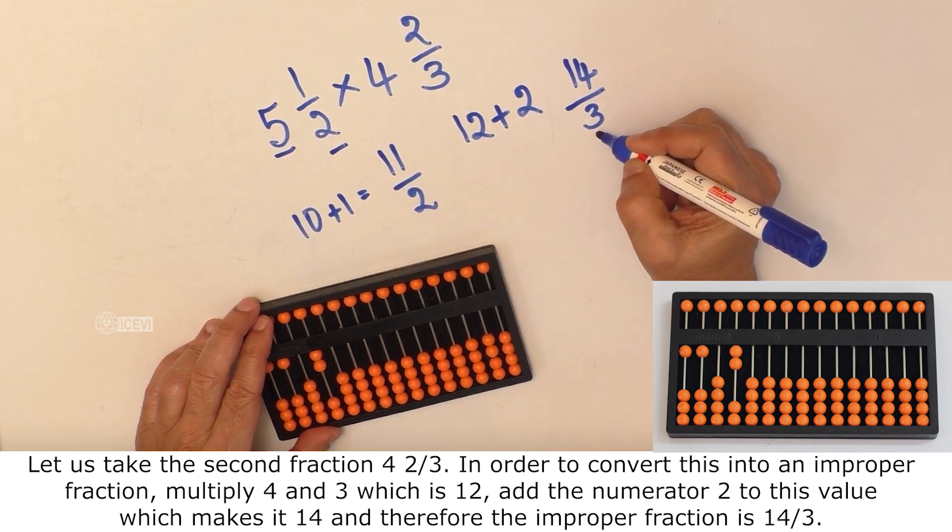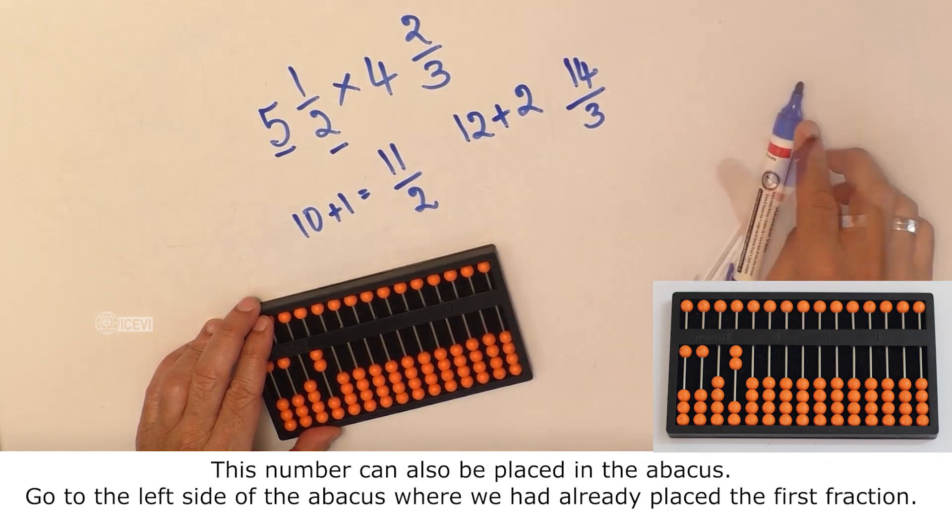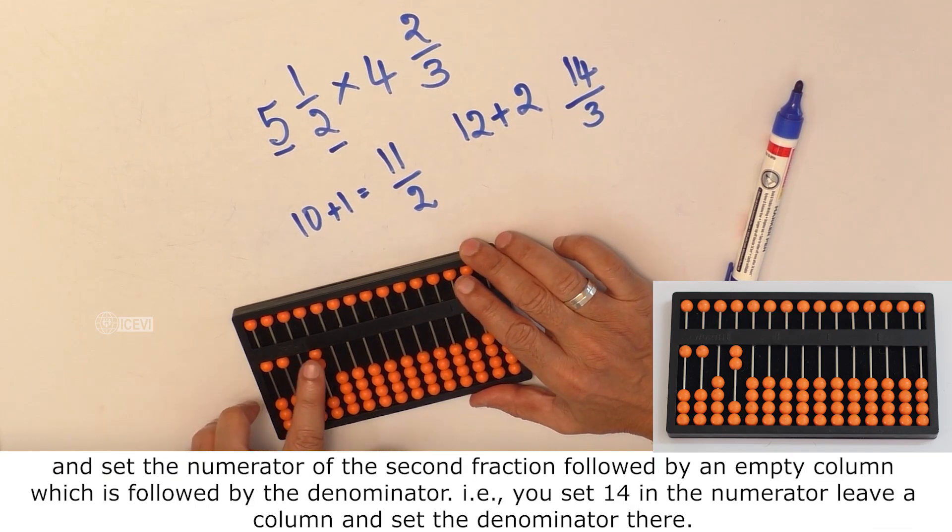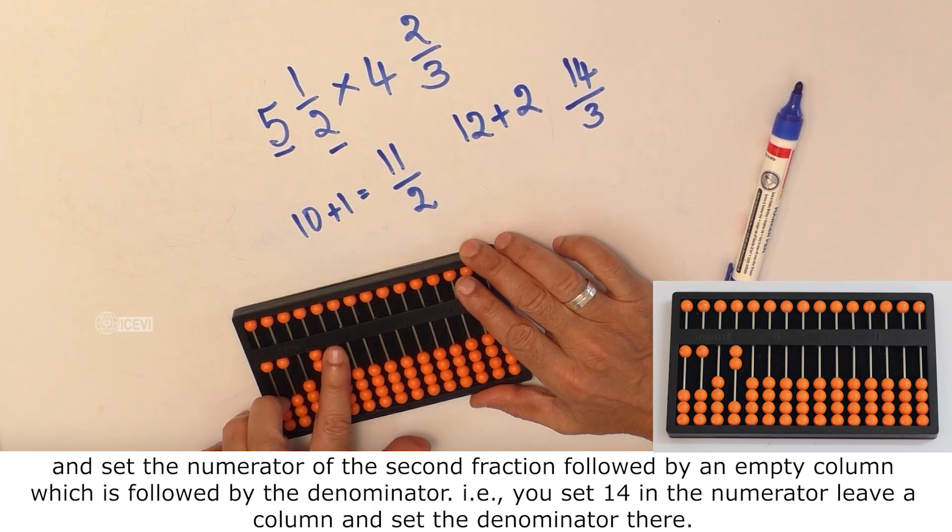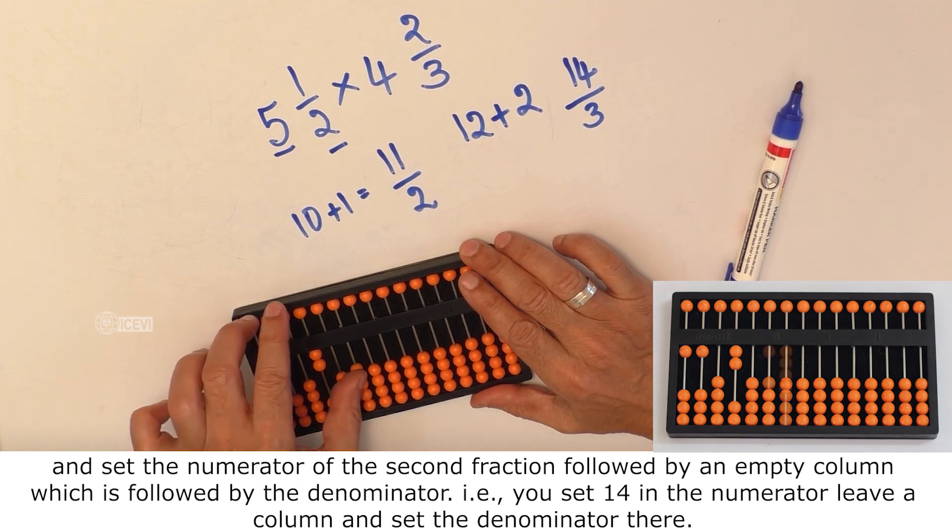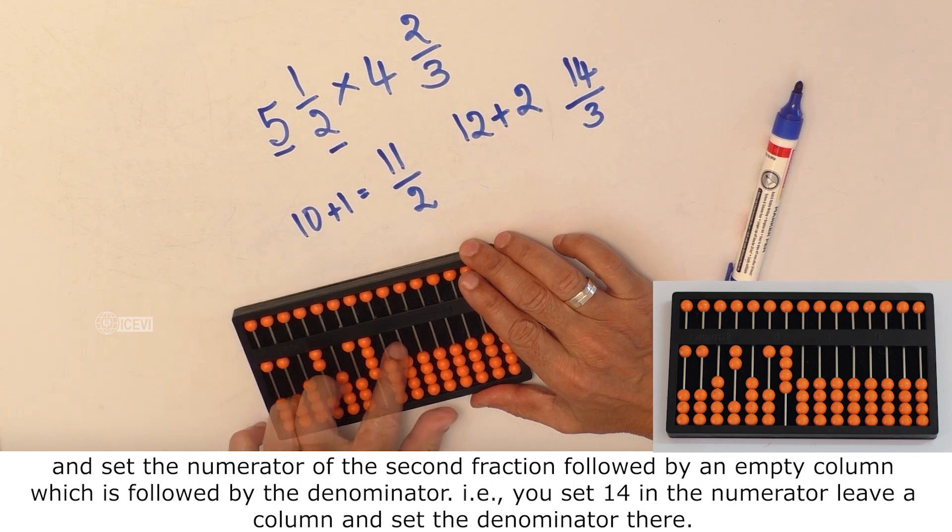This number can also be placed in the abacus. Go to the left side of the abacus where we had already placed the first fraction and set the numerator of the second fraction followed by an empty column which is followed by the denominator. That is you set 14 the numerator, leave a column, and set the denominator there.